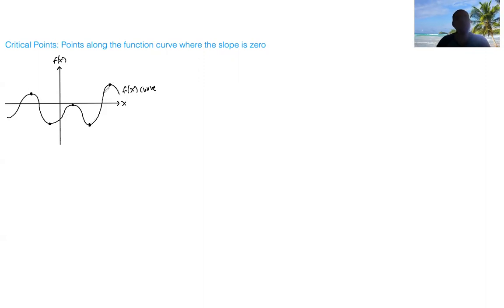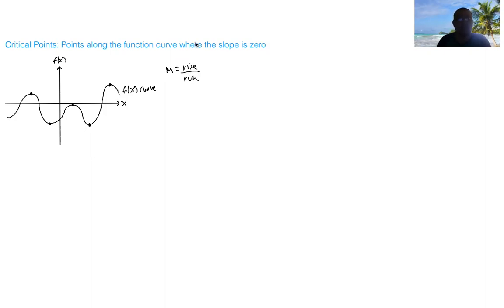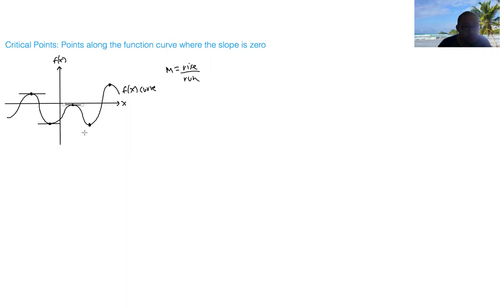At all of these points, we know that the slope is going to be zero because the slope, represented by m, can be thought of as the rise over the run in terms of the tangent line at those points. And so if we were to drop a tangent line at those points, this is what those tangent lines look like — they'd be perfectly horizontal. So the tangent line at all these points are the same; they're just horizontal lines.